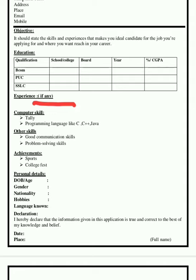The next section is achievements. Write achievements in one or two sentences. For example, if you attended a college fest, write the name of the fest, what prize you won, and whether it was at district, state, or national level — all in one sentence. You can also include sports, drawing, or sketching achievements with the prize and year. Do not elaborate. Keep every detail concise in one sentence.